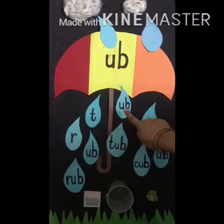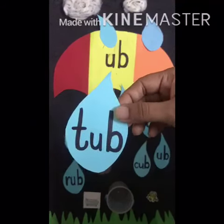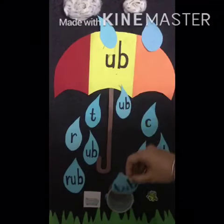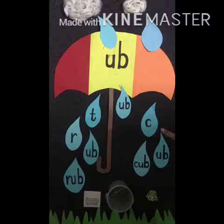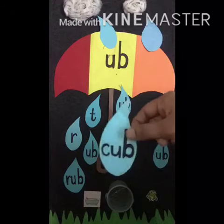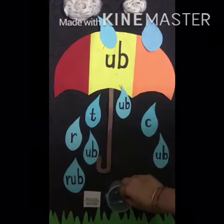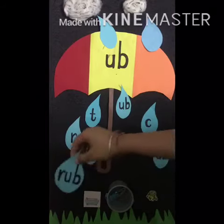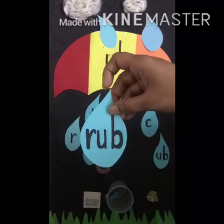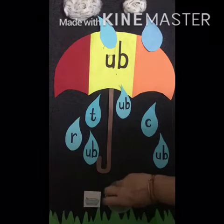T, up — tub. T, up, tub. Ma'am will put this raindrop in the bucket. Now I will read the next one. K, up — cub. And we will put this raindrop also in the bucket. R, up — rub. R, up, rub. Ma'am will put this raindrop also in the bucket.